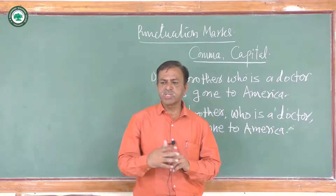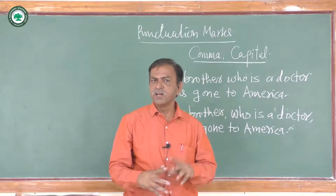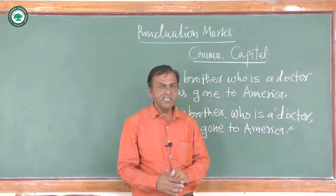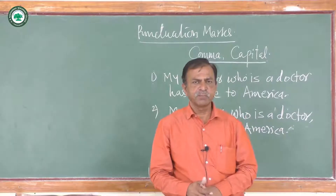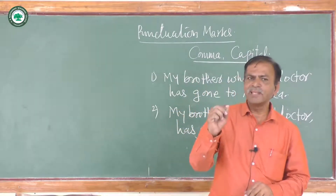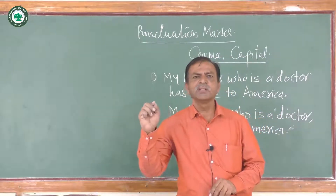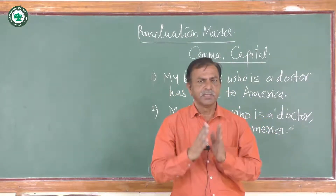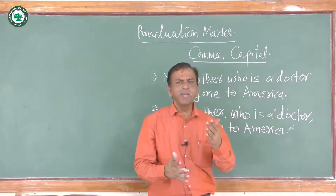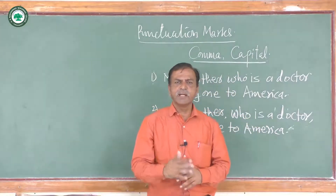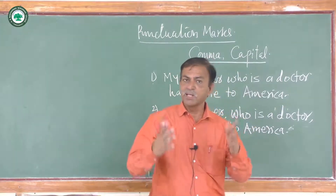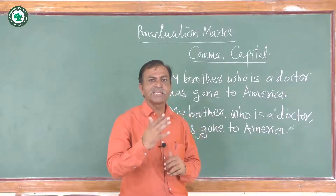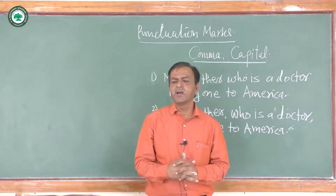The fourth use of comma is to separate a tag question from the sentence. For example: 'He is a teacher, isn't he?' This comma separates the question tag from the sentence. The question tag may be positive or negative — a positive sentence has a negative question tag, while a negative sentence contains a positive question tag, which you have already studied at different levels.